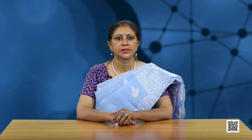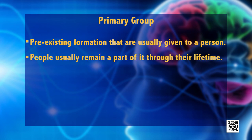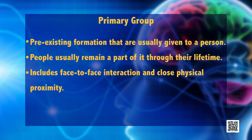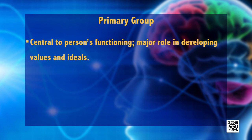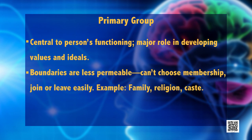There are different types of groups. Primary groups are pre-existing formations usually given to a person, with face-to-face interaction, close physical proximity, and warm emotional bonds. They are central to a person's functioning and development of values. Boundaries are less permeable and membership cannot be easily chosen — examples are family, religion, and caste. Secondary groups are joined by choice, with more impersonal and less frequent relationships. They may be short-lived and easy to leave — for example, political parties.